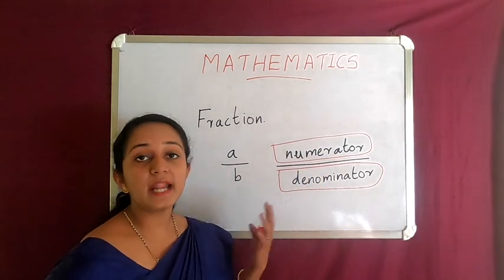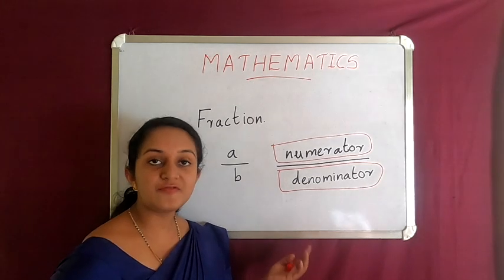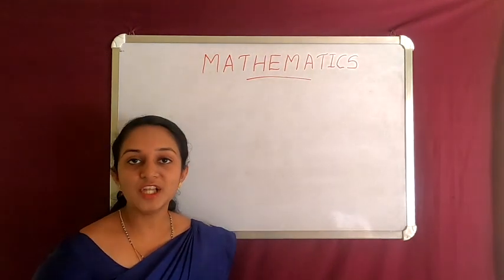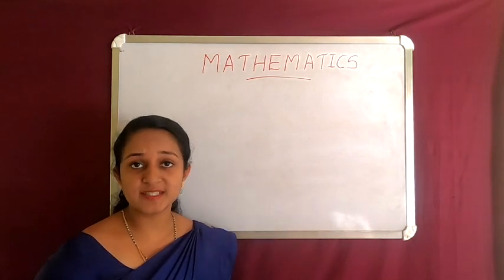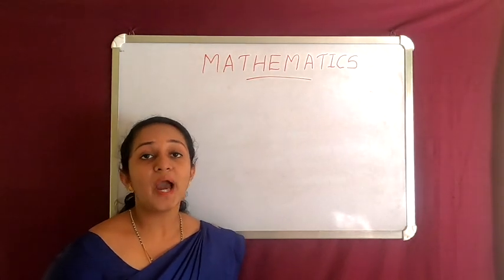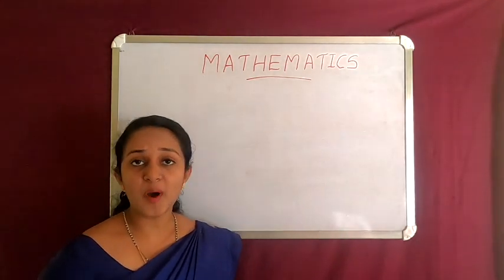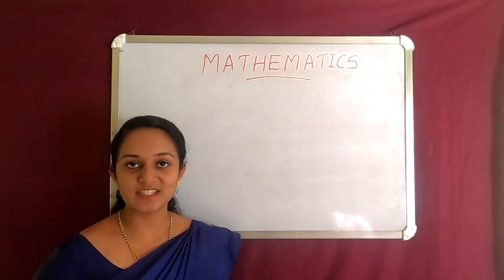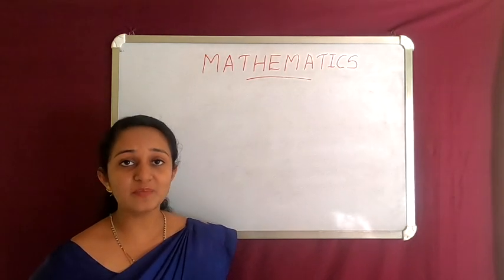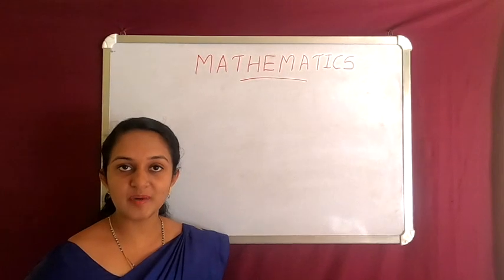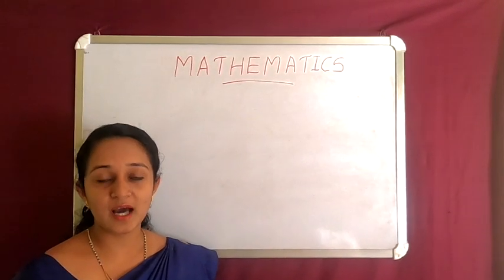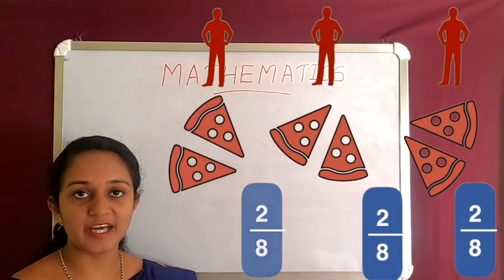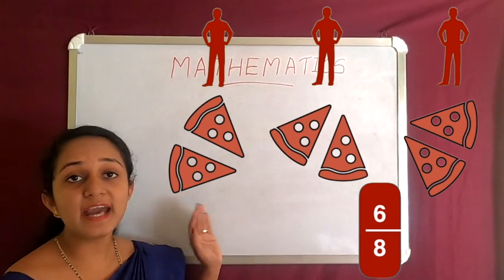Now suppose your friend asks you how much pizza you had. You will not say that you had one big pizza divided into eight equal parts and you took two parts. Since you now know fractions, you will say that you had two by eight portion of pizza. And how much pizza did all your remaining friends have? Six parts of pizza remaining out of eight, so they all had six by eight part of pizza.